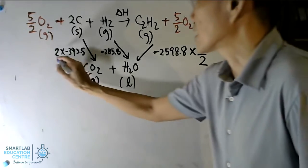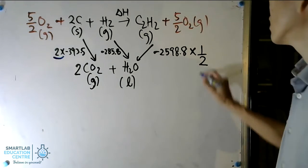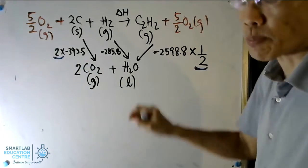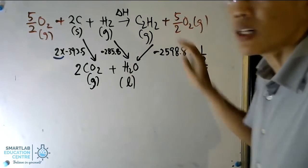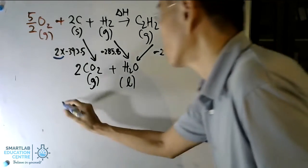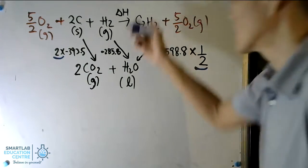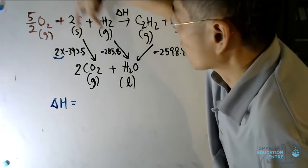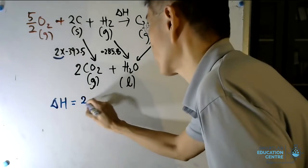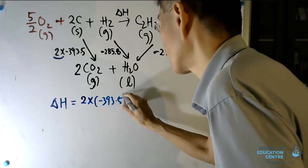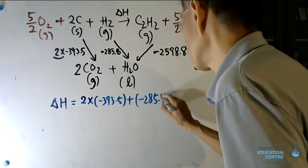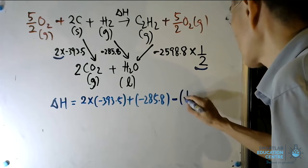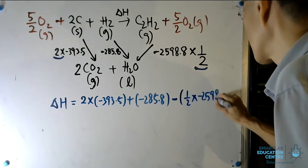A common mistake is forgetting to multiply by the relevant factor — whether two or one-half. Another common mistake is forgetting to add molecules at each point so that atom counts are equal. Finally, applying Hess's Law: the two enthalpy changes going down keep their signs, giving 2×(−393.5) + (−285.8), and the C2H2 combustion arrow is flipped, so we subtract −(1/2 × −2598.8).